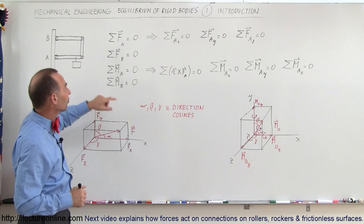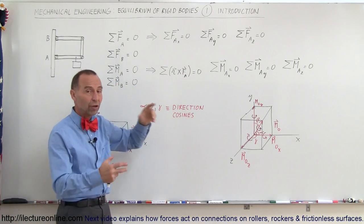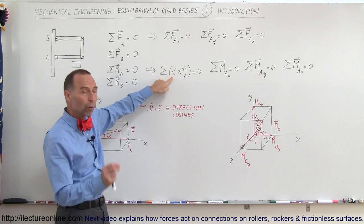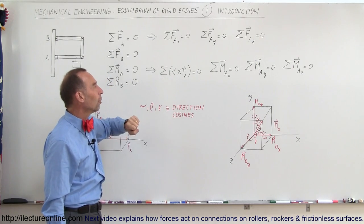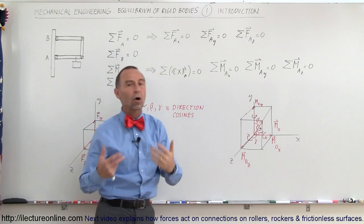In the same way, we can also say that all the moments at any point add up to zero, which means any cross product between the position vector to where the force is acting from the point where you want to consider the moment times all the forces acting at those various points. When we add them all up in the x-direction, the y-direction, z-direction, they must all add up to zero.